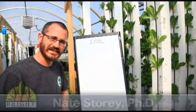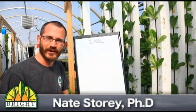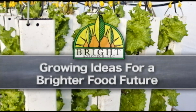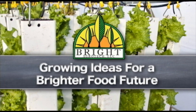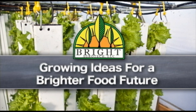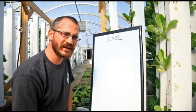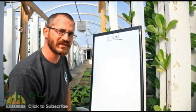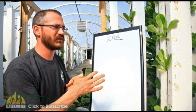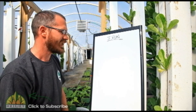This is Nate Stewart with Bright Agritech, and today we're going to talk about iron. Iron is one of the most abundant elements on the face of the planet, and yet it's oftentimes deficient in aquaponic systems.